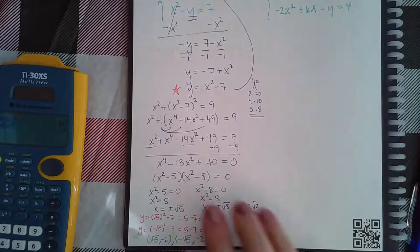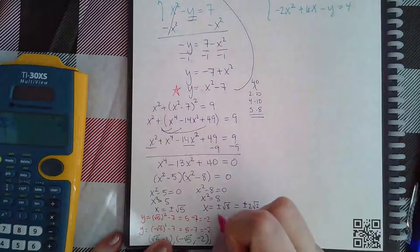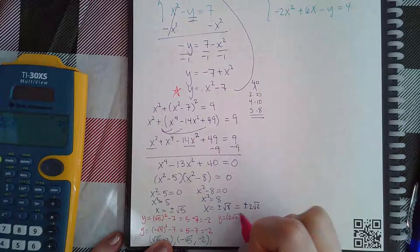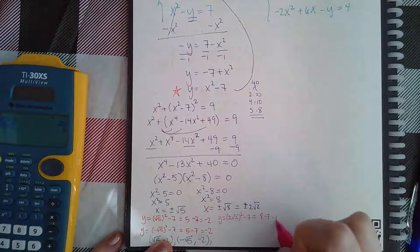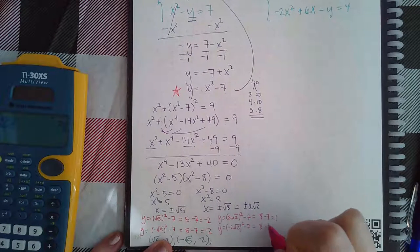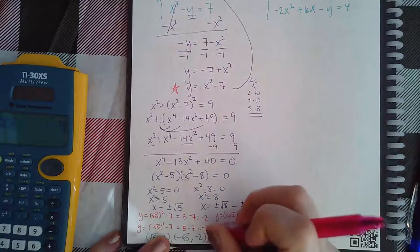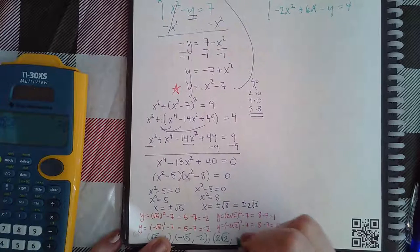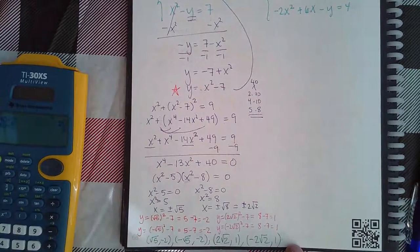From the other factor I'm going to plug it in here. I have y equals and I'm going to use the positive 2 square root of 2, so I'm going to get positive 8 minus 7 which is 1. When I plug in negative 2 square root of 2 I also get positive 8 minus 7 which equals 1. I have two more solutions which are 2 square root of 2 and 1, and negative 2 square root of 2 and 1.